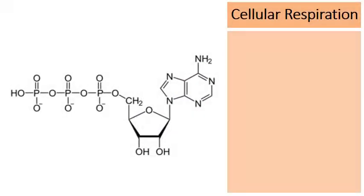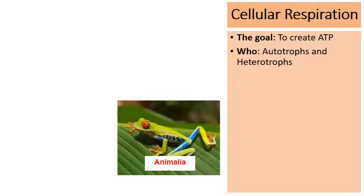Shifting focus to cellular respiration — this is a picture of the molecule called adenosine triphosphate. The goal of cellular respiration is to create this energy molecule, abbreviated ATP — adenosine triphosphate.